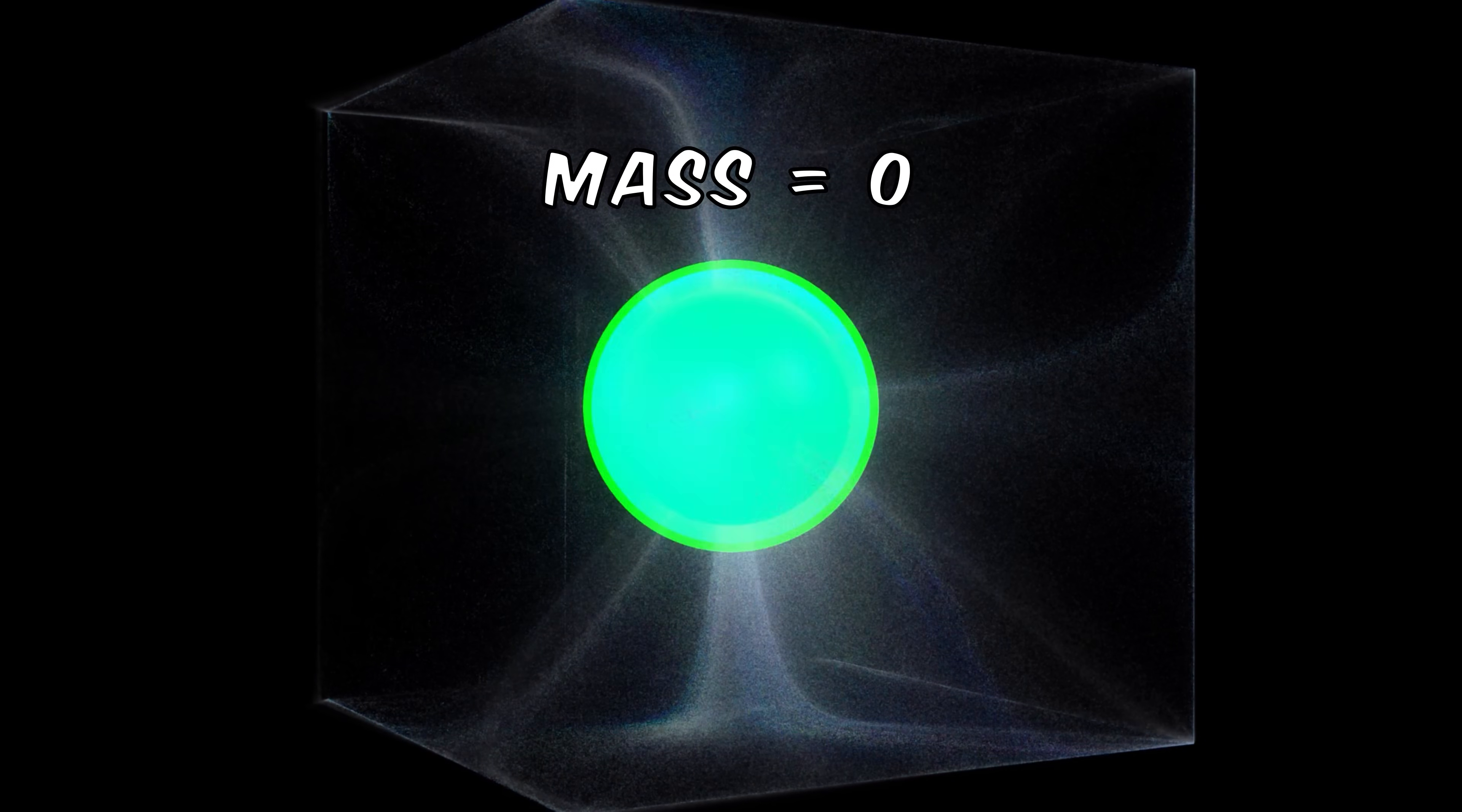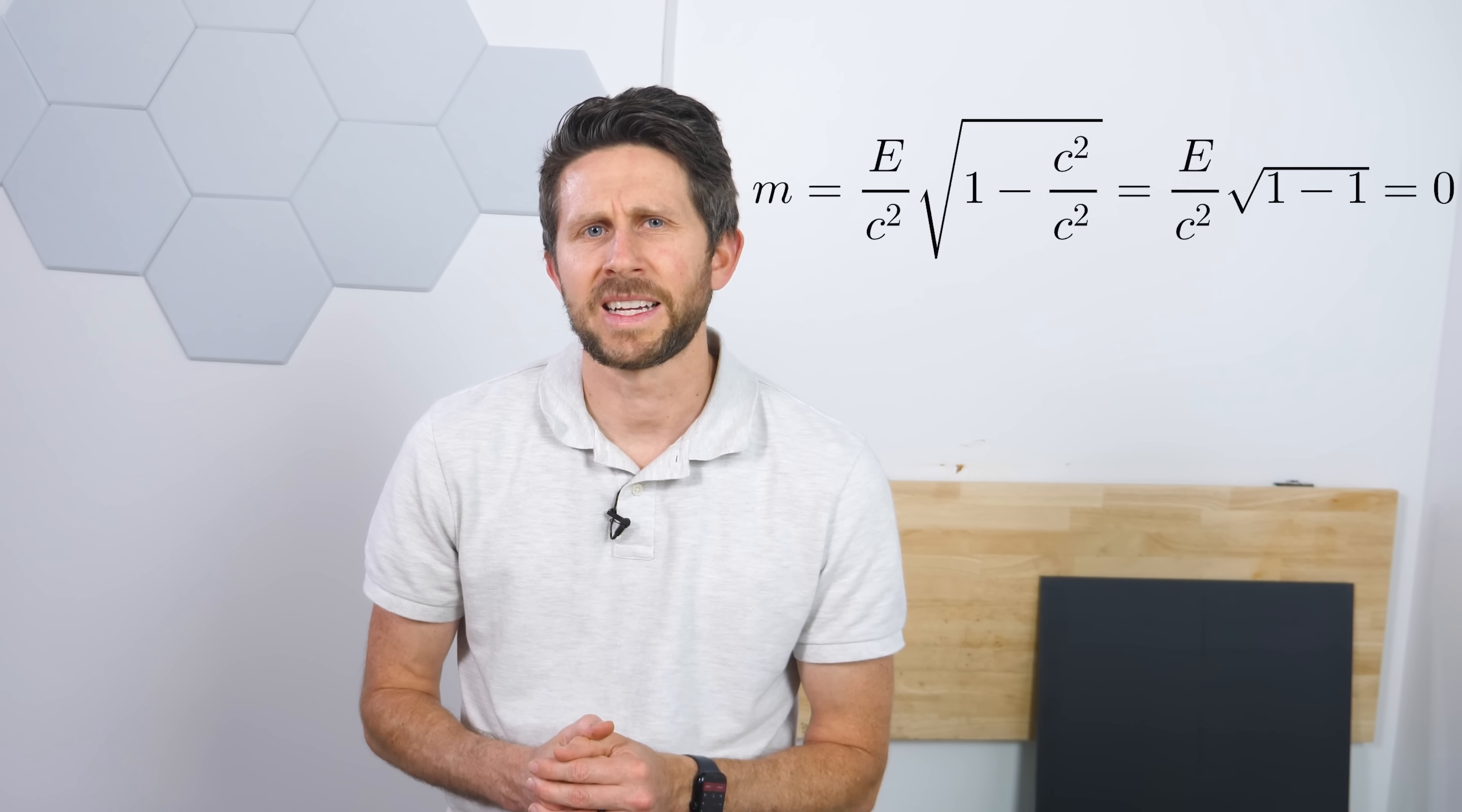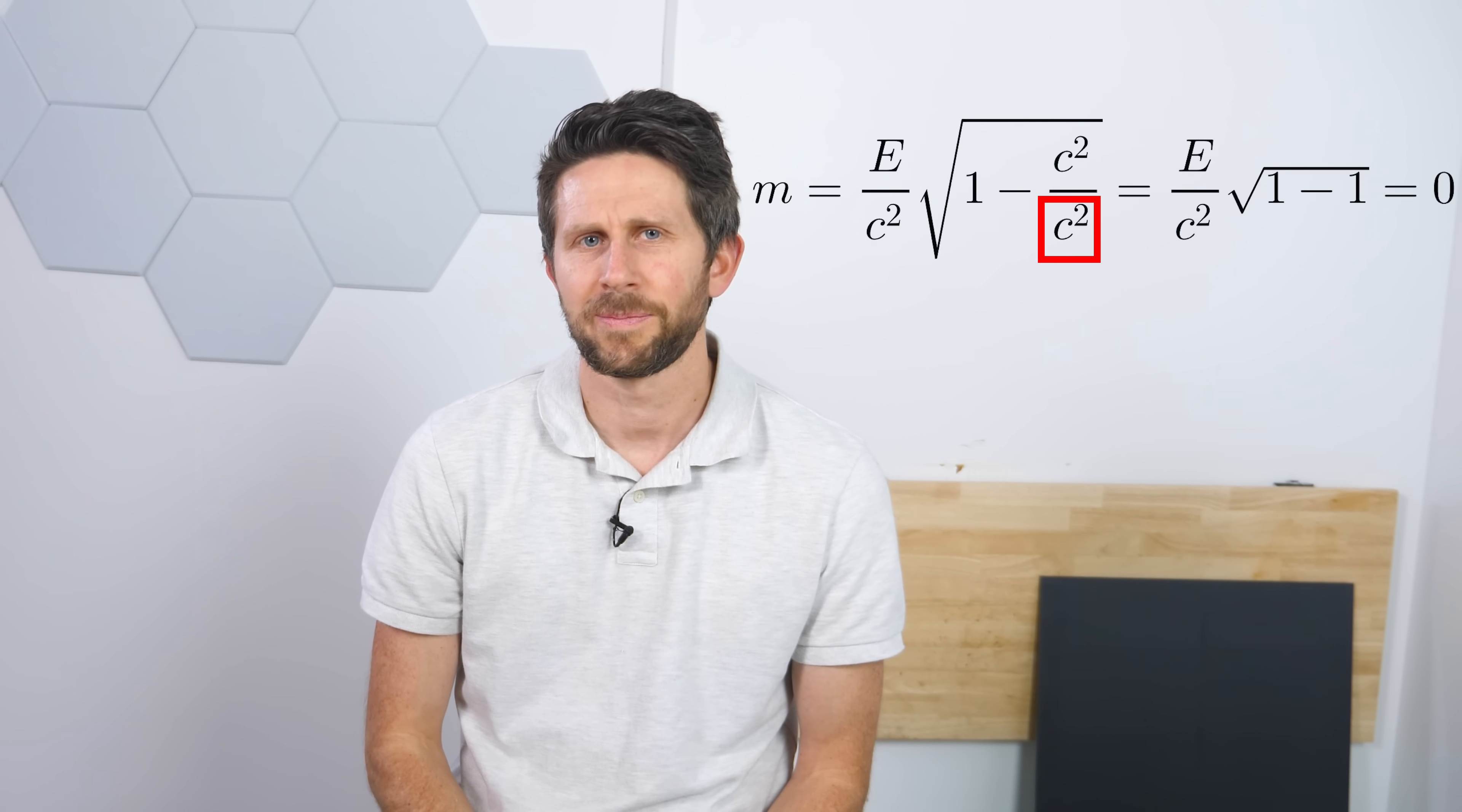But there's a problem. Light has no mass. And according to Einstein's special theory of relativity, anything that has no mass must travel at the speed of light. But if light always travels at the speed of light, then why can we measure it being slower than the speed of light in this experiment here? Well, first, let's define what we mean by the speed of light.